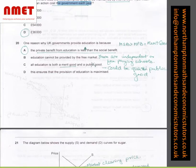One reason why UK government provides education is because the social benefit of providing education is more than private benefits. It's a merit good. So the private benefit from education is less than the social benefit. It's the other way around. Same thing. I have also explained over here, education cannot be provided by the free market, but we know they are independent schools. Hence, this statement is not true. In C, all education is both a merit good and a public good. No, it is not, because we have examples of independent schools.